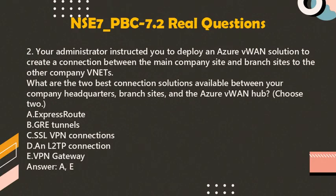Question 2: Your Administrator instructed you to deploy an Azure Virtual WAN solution to create a connection between the main company site and branch sites to other company VNETs. What are the two best connection solutions available between your company headquarters, branch sites, and the Azure Virtual WAN hub? Choose two.